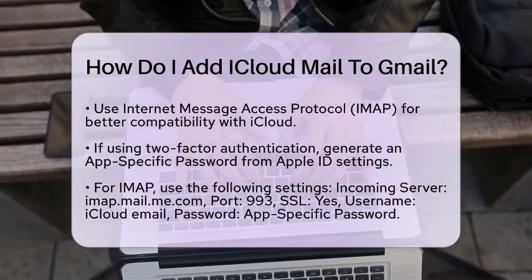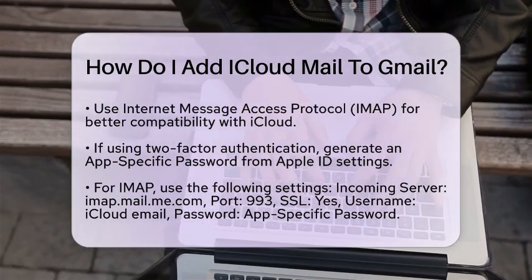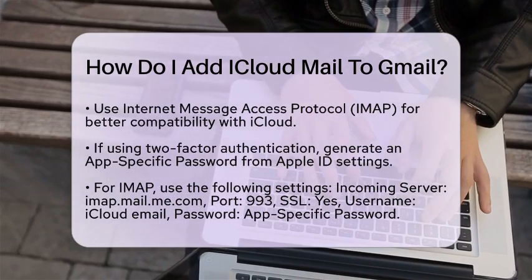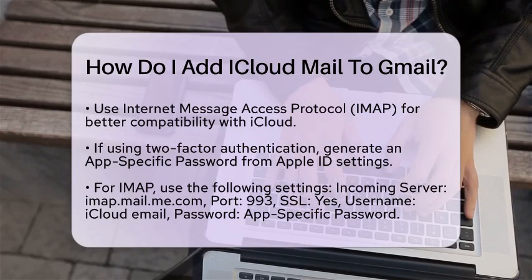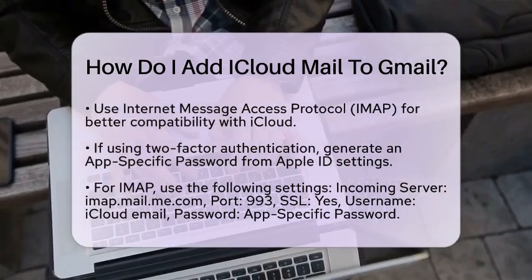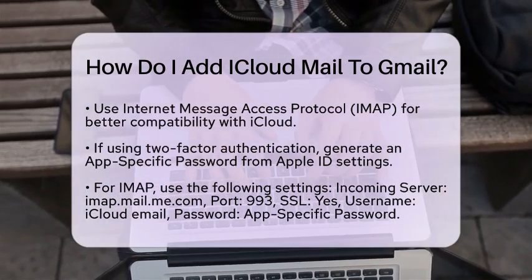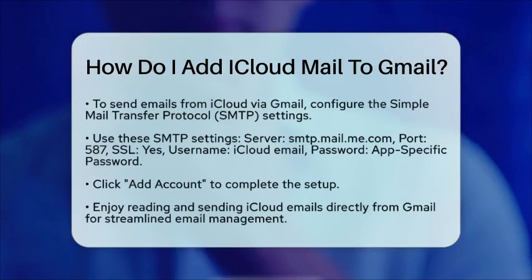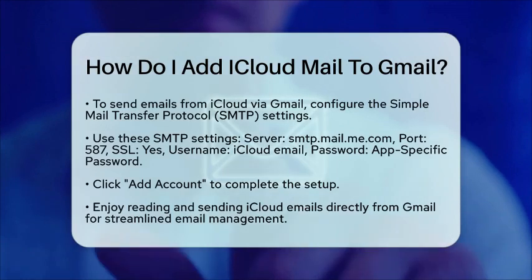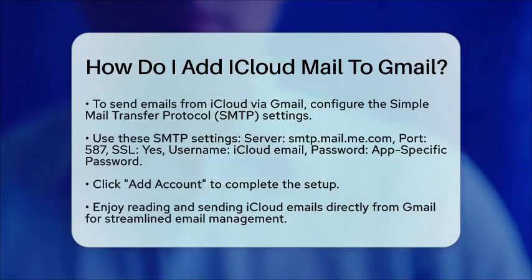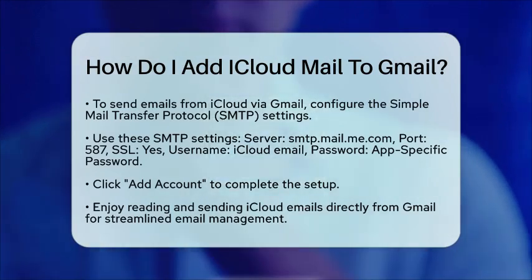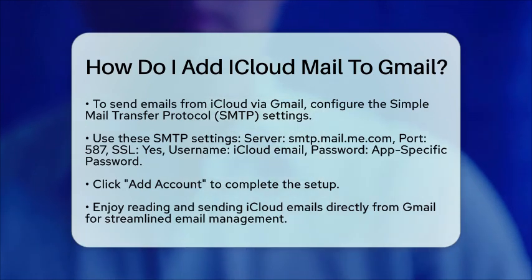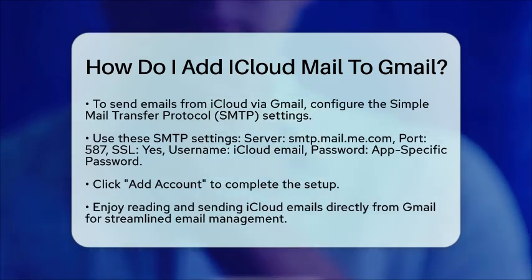If you want to send emails from your iCloud address using Gmail, you will need to configure the SMTP (Simple Mail Transfer Protocol) settings as well. Here are the details: SMTP Server: smtp.mail.me.com. Port: 587. Requiring SSL/TLS: Yes. Username: your iCloud email address. Password: use the same app-specific password.